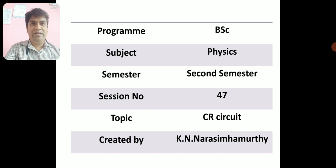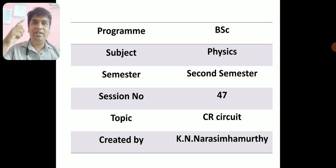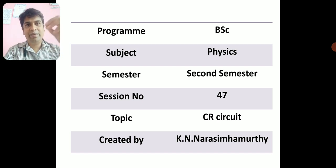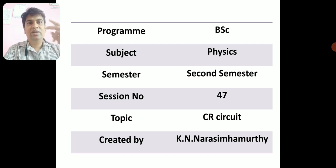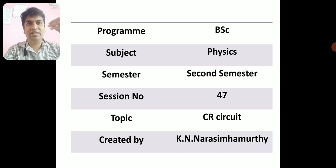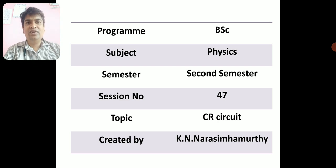The entire syllabus of the second semester has been divided into four equal parts, each part called a unit. The paper is 201 — two represents the second semester and one represents the theory paper. 202 is a practical paper; the last digit one means theory, two means practical. This same naming follows for each semester, so third semester would have 301 and 302.